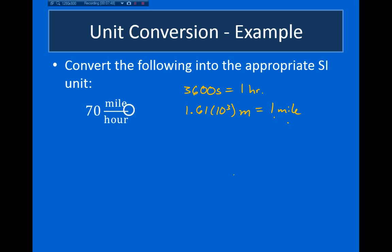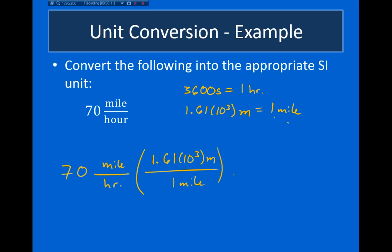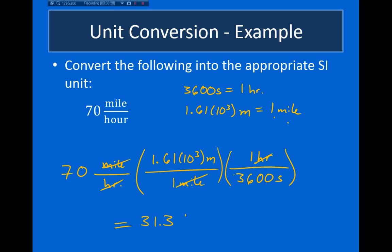Let's use these two to convert 70 miles per hour. We have 70 miles divided by hour, and we multiply by 1.61 times 10 to the third meters divided by 1 mile — the miles cancel. For the second conversion factor to convert hours into seconds, since the hour is in the denominator, we put 1 hour in the numerator so it cancels, and divide by 3,600 seconds. Plugging this all into a calculator gives 31.3 meters per second.